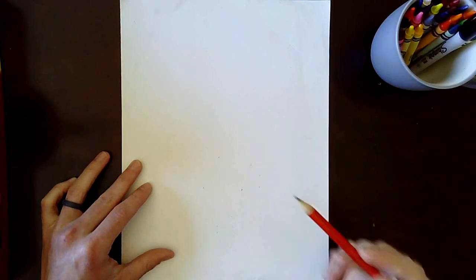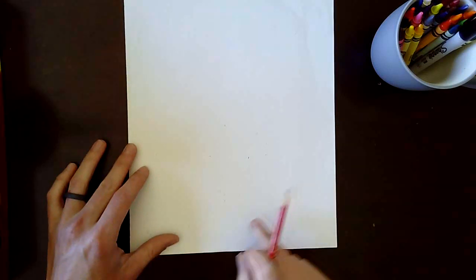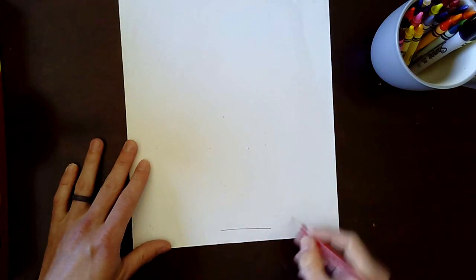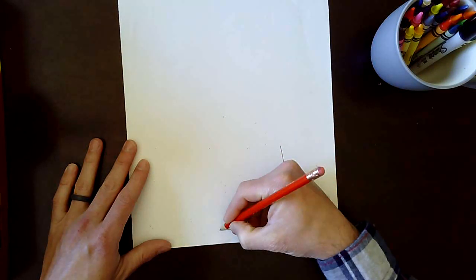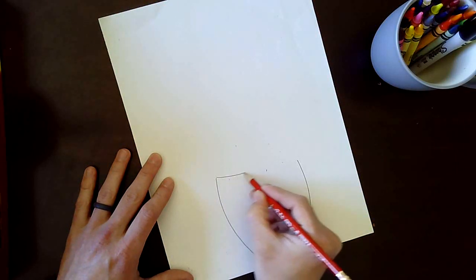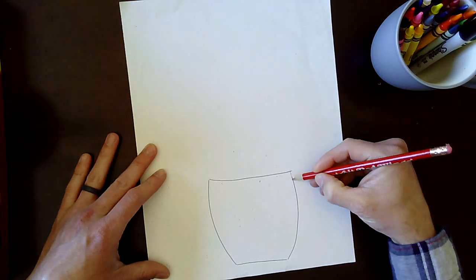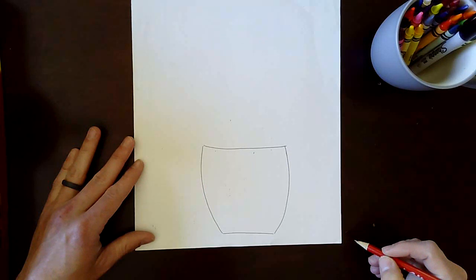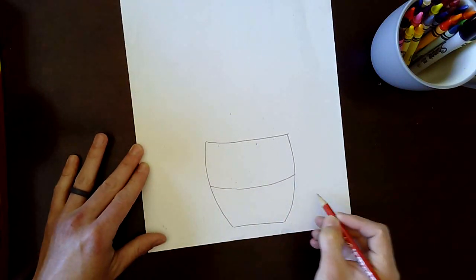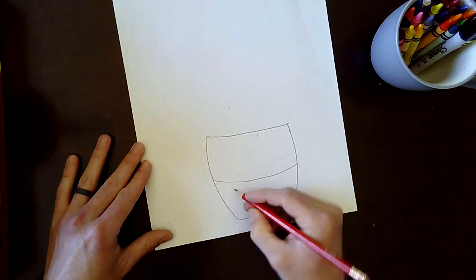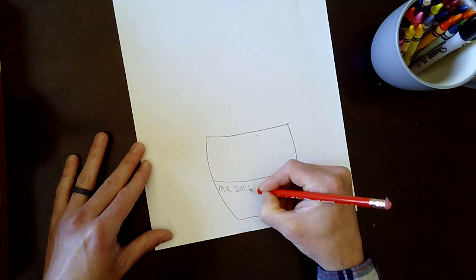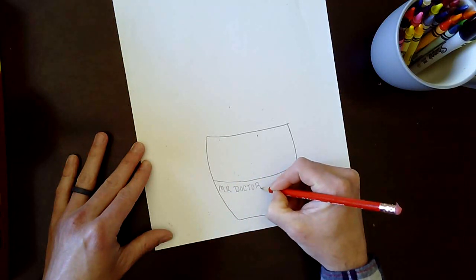We're going to jump in by using a pencil first and we are going to make the vase near the bottom of our paper. Now your vase shape can be any shape you really want it to be. Here is mine. I'm also going to add, like Vincent Van Gogh did, a line in the middle and he wrote his name under the line. So I'm going to add my name, just like him, Mr. Doctor.